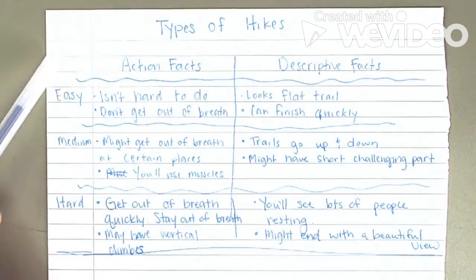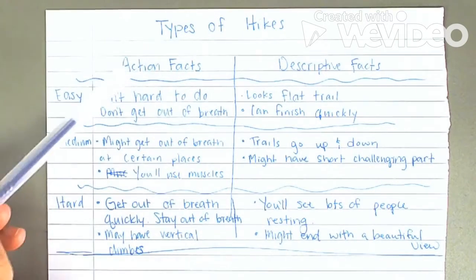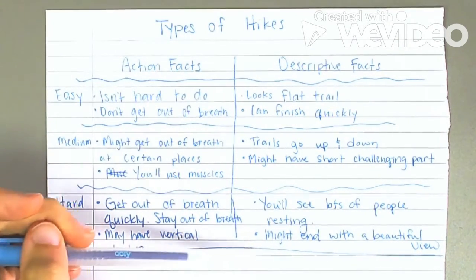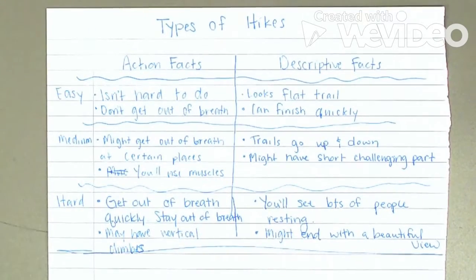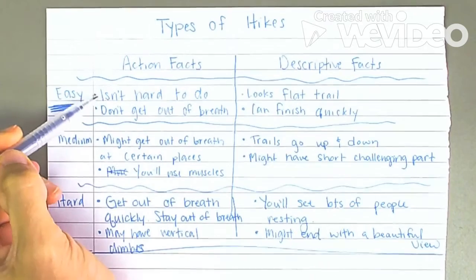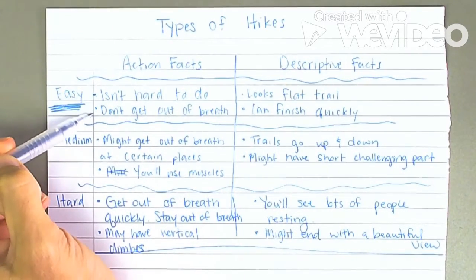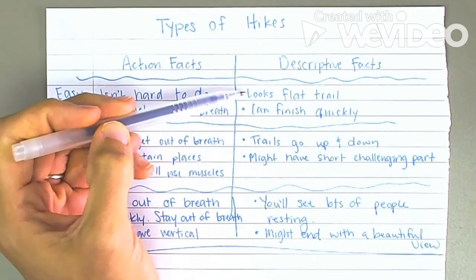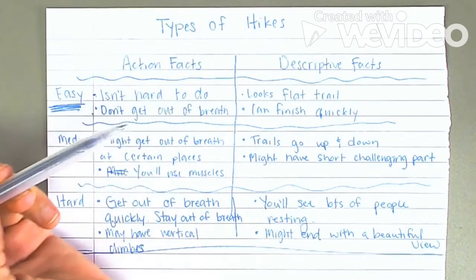As you can see on my paper, I've done a quick pre-writing just to get my ideas ready to go. I've made a chart with action facts and descriptive facts, and I talked about each type of hike. For easy hikes, the action facts are that it's not so hard to do and you probably won't get out of breath. The descriptive facts are what it looks like: a flat trail that you can finish pretty quickly.